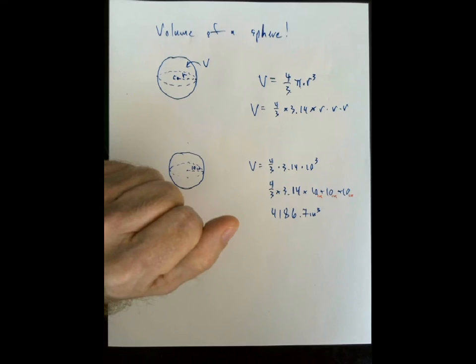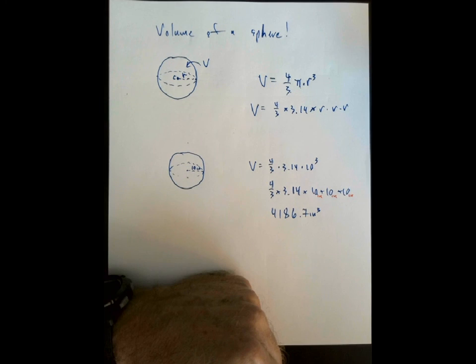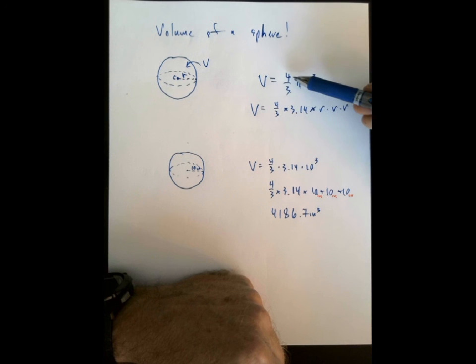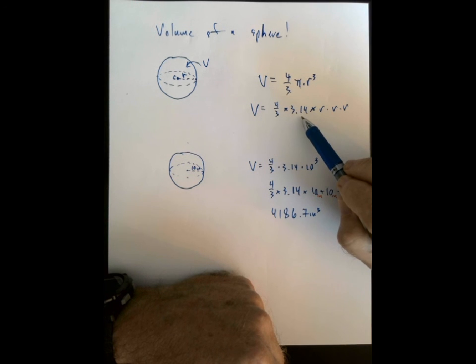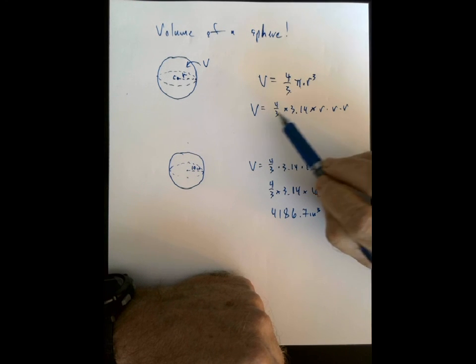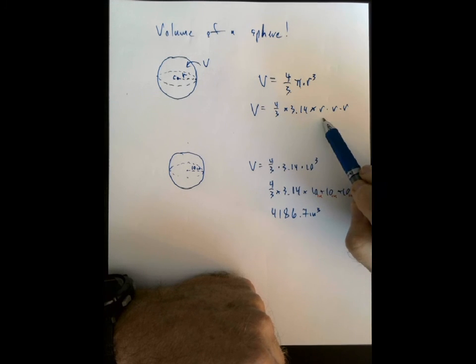All right, so, now, what does the volume formula for a sphere look like? Well, the volume here is the fraction 4 over 3, times pi, times r to the third power, okay? So, r to the third power means r times r times r, pi is still 3.14, so to find the volume of a sphere, we'd multiply 4 over 3, times 3.14, times r, times r, times r.